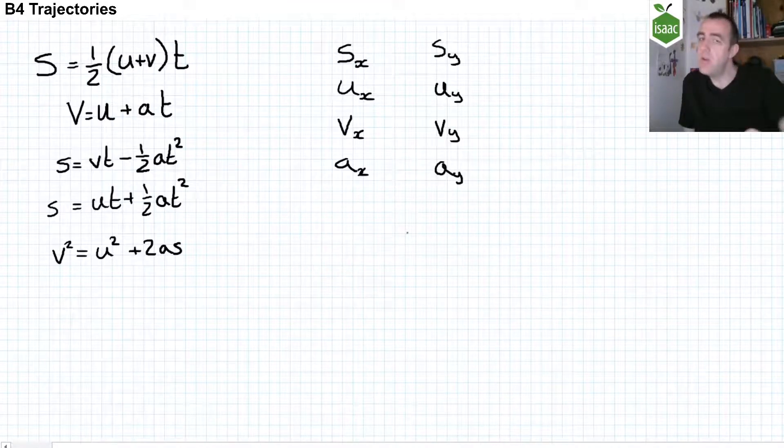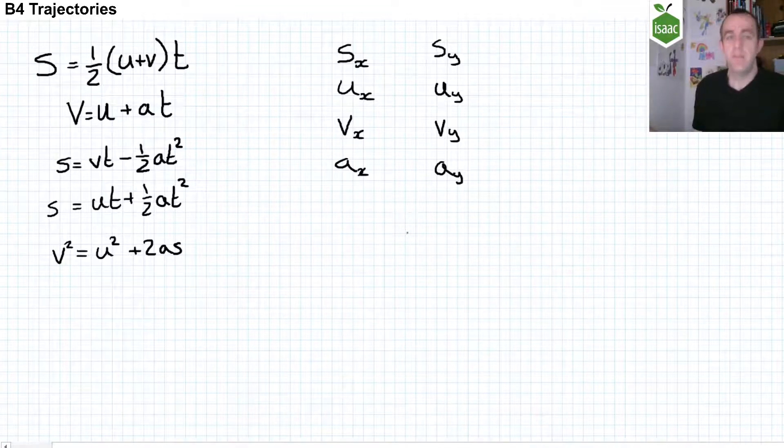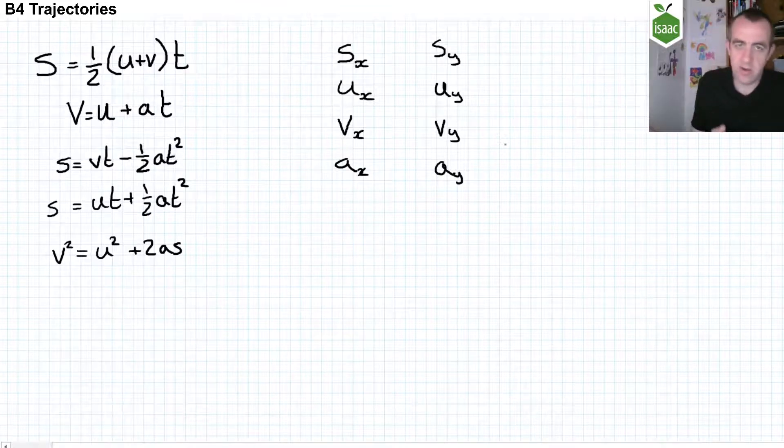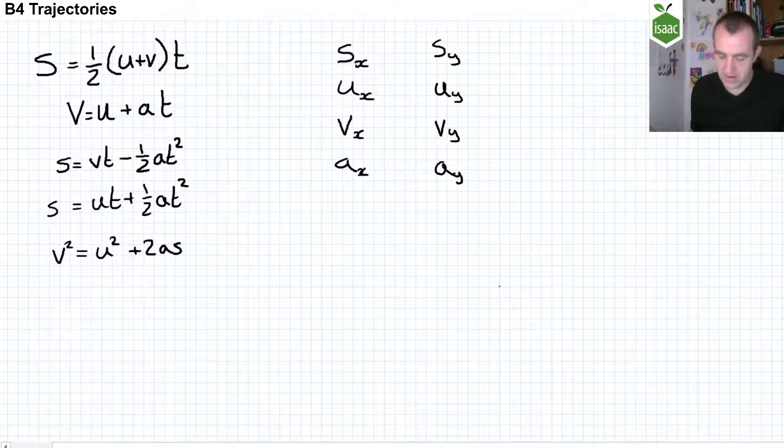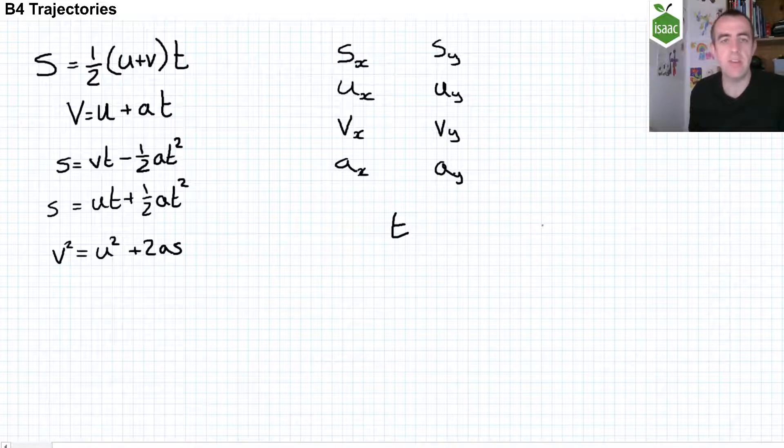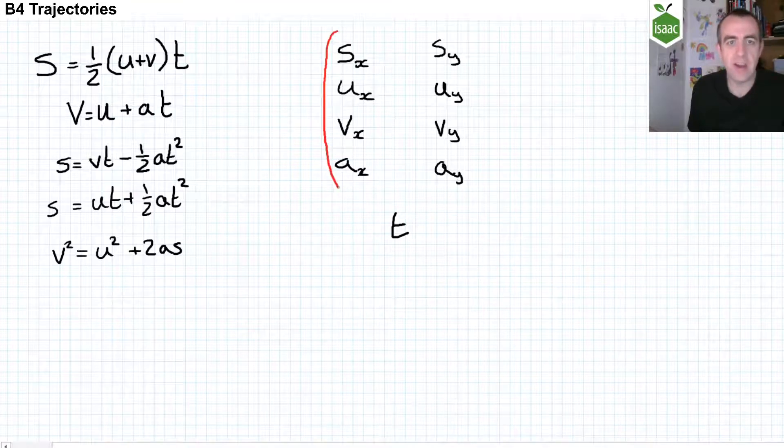And within those five equations there are eight variables. The displacement in the x-direction, the displacement in the y-direction, initial velocity in both directions and so on. And there is one variable which is common to both directions. And that is time. I like to describe that as the conduit through which the x-direction variables communicate with the y-direction variables.